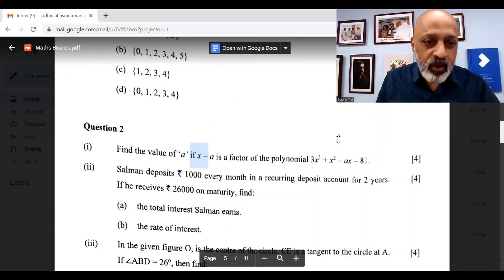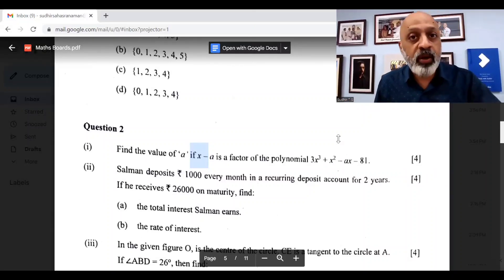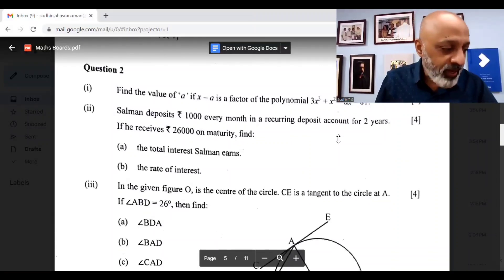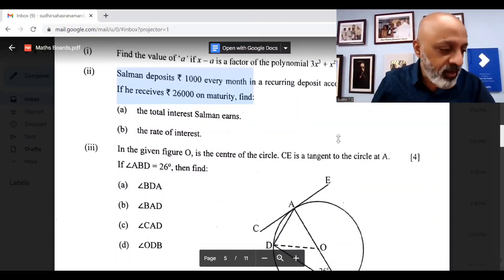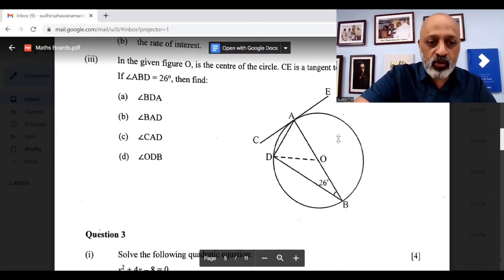Question 2: The first part, find the value of A, A equals 3. The second one, Salman deposits Rs. 1000 every month in a recurring deposit account for 2 years. If he receives Rs. 26,000 on maturity, the rate of interest is 8% and the total interest earned by him is Rs. 2000. Then the value of angles: A is 90 degrees, B is 64 degrees, C is 26 degrees and D is 26 degrees.